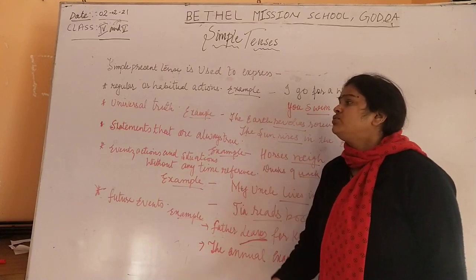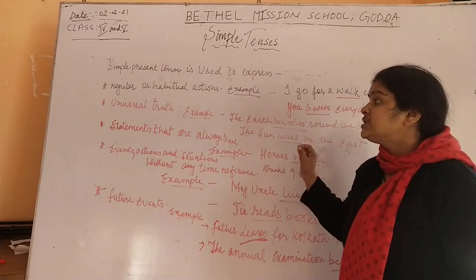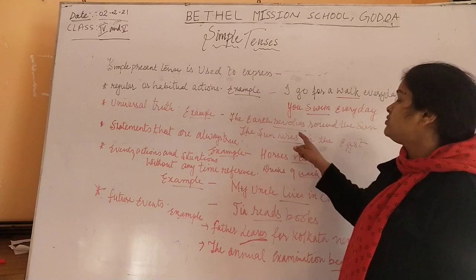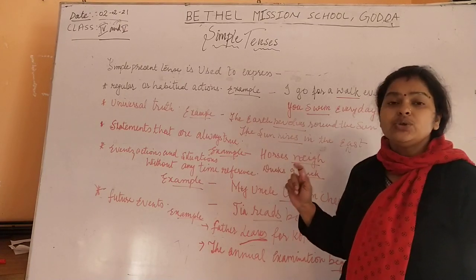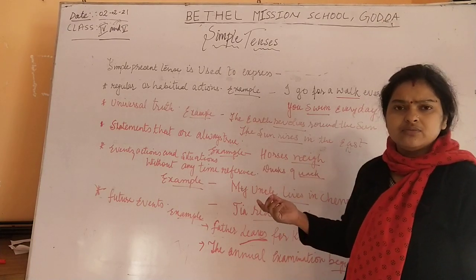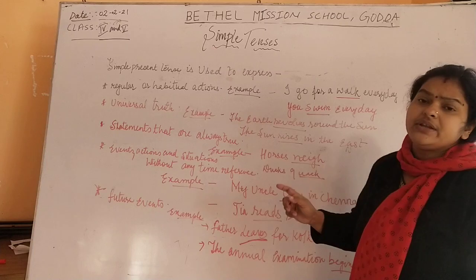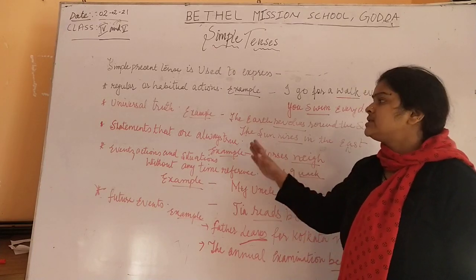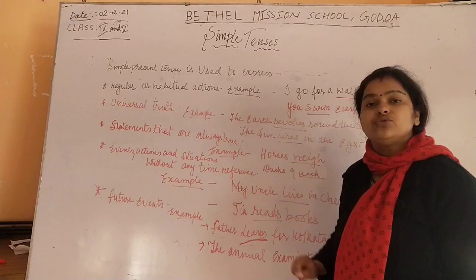Second: universal truth. Present tense is used to show universal truth which cannot be denied. For example, the earth revolves around the sun — it is a universal truth that the earth is revolving around the sun. The sun rises in the east — every day the sun is rising in the east, which is a universal truth. Present tense is used to show universal truth.